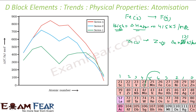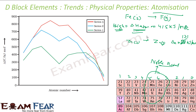The maxima occur somewhere in the middle and minima at the extremes. Importantly, ΔH atomization is a key factor in determining electrode potential. If this value is very high, these metals tend to behave like noble metals. So ΔH atomization will actually decide how reactive a metal is.